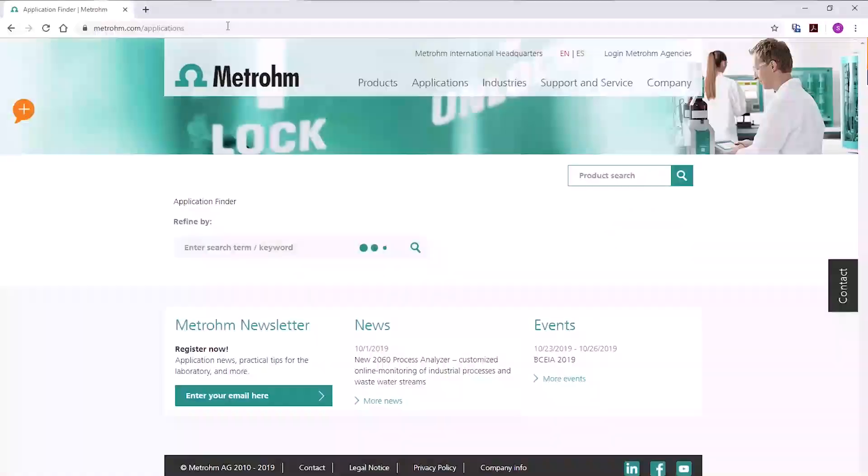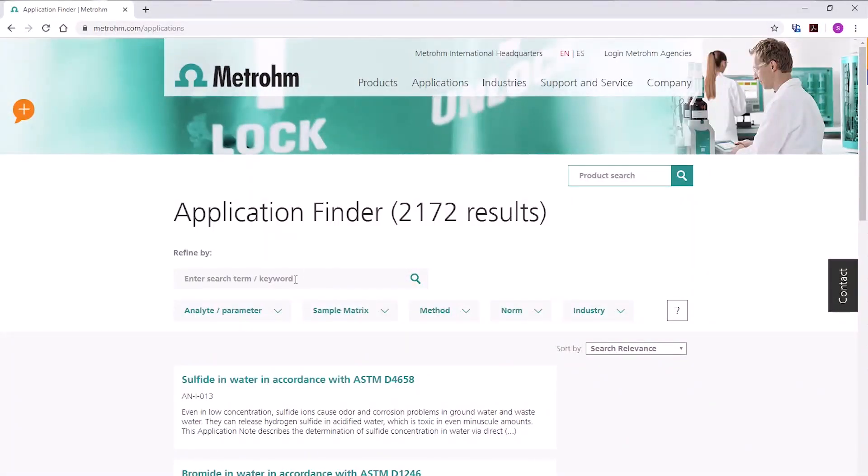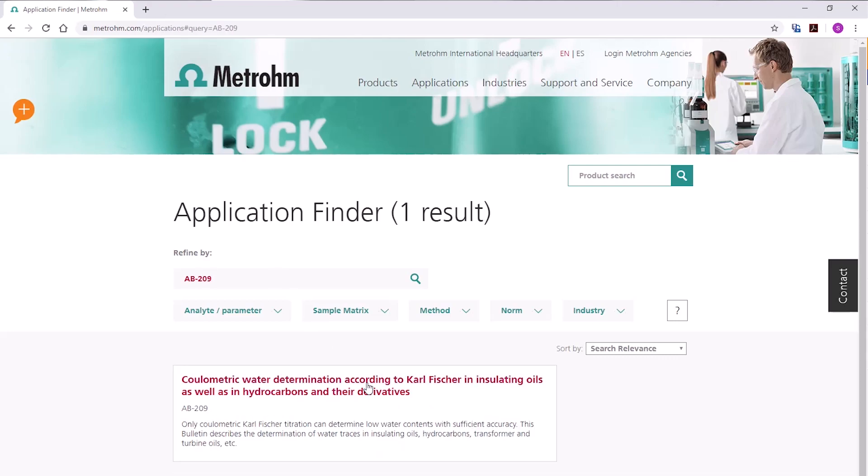You can find more information in the application finder on our website. Go to www.metrohm.com/applications and search for application bulletin AB 209.